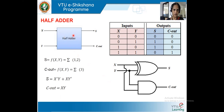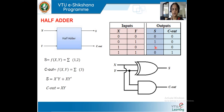If we write the truth table for the half adder, we have two inputs X and Y, giving four different combinations: 00, 01, 10, and 11. According to the inputs, we get two outputs: sum and carry. If both inputs are zero, the output is zero. If any one input is one, sum is one. If both inputs are high, sum is zero but carry is high.